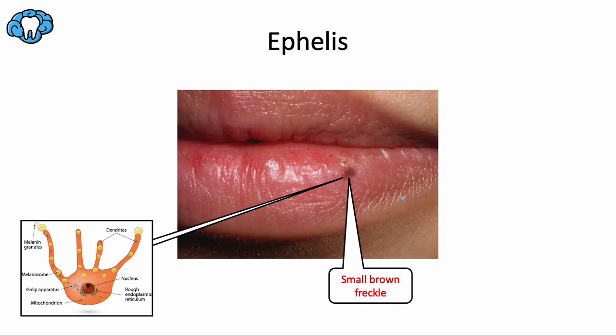Ephelides occur usually in childhood, tend to diminish with age, and tend to be lighter in appearance than the next lesions. An ephelis is completely benign and requires no treatment at all.